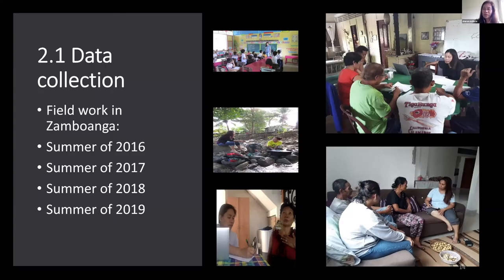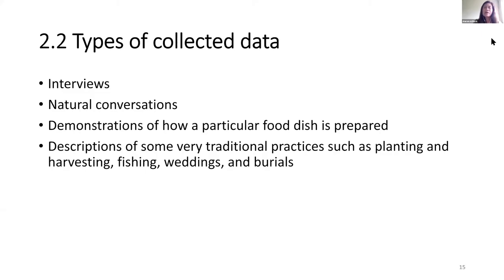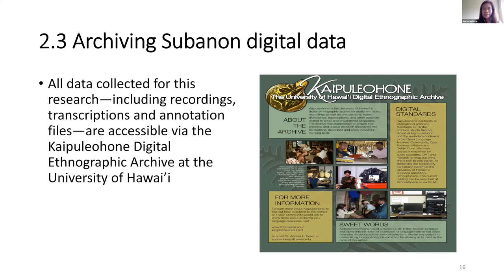Research methodology. Even if I am a native speaker of this language, I did not rely exclusively on my knowledge of the language. I had to collect data. So I did fieldwork beginning in summer of 2016, summer of 2017, summer of 2018, and summer of 2019 in Zamboanga. The types of data collected include interviews, natural conversation, recordings of demonstrations of how a particular food dish is prepared, and recordings of descriptions of traditional practices such as planting, harvesting, fishing, weddings, and burial. All data collected, including recordings, transcriptions, and annotation files, are accessible via the Kaipuleohone Digital Ethnographic Archive at the University of Hawaii.